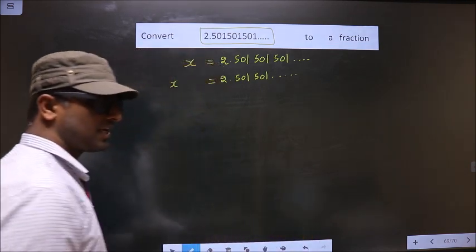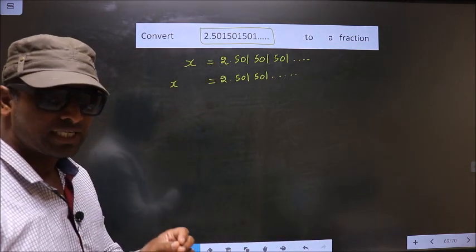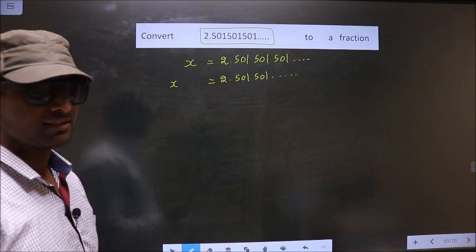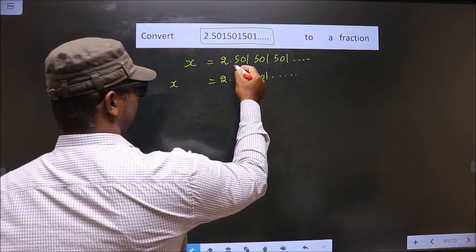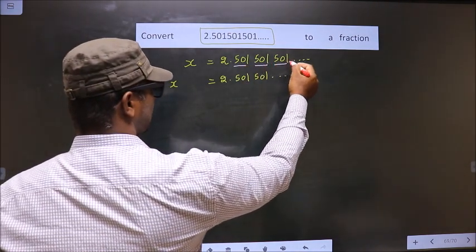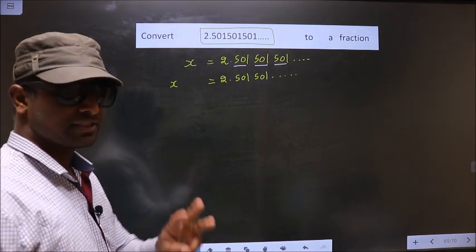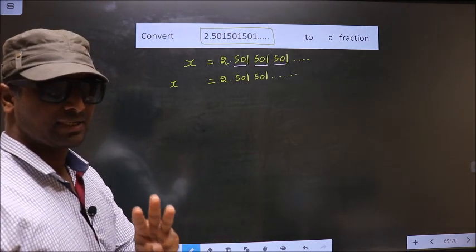Now you should check how many numbers are being repeated. Here, 501, 501, 501 is kept on repeating. That means 3 numbers are being repeated.